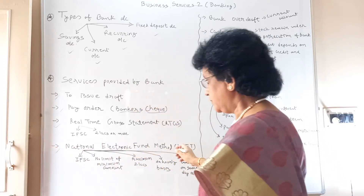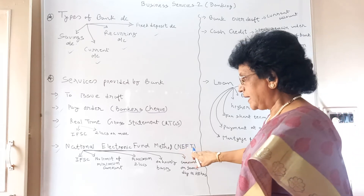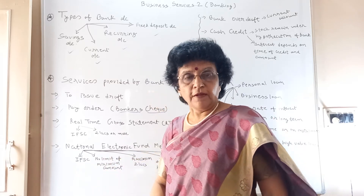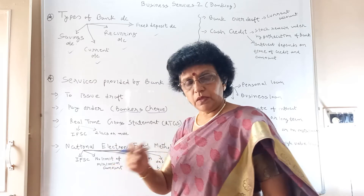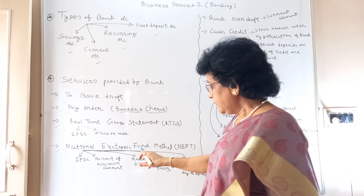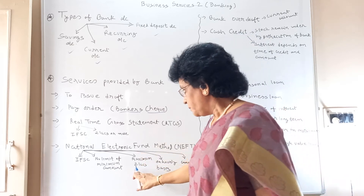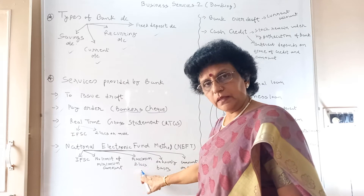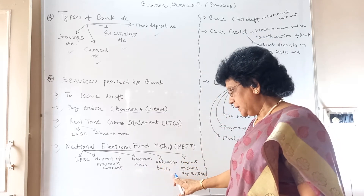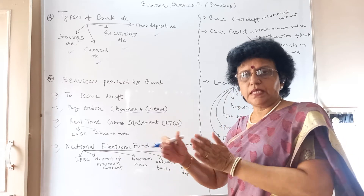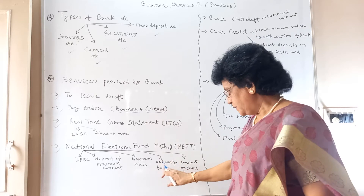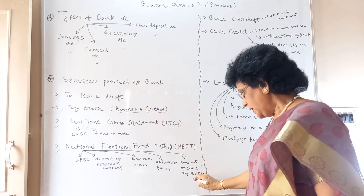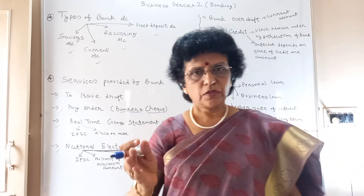Next is NEFT — National Electronic Fund Transfer Method. Here also you need the IFSC code. There is no minimum amount limit. If you want to send less than 2 lakhs, you use NEFT. For amounts of 2 lakhs or more, RTGS is used. With NEFT, money is transferred on an hourly batch basis. Your amount will be credited to the other party either on the same day or within a maximum of 48 hours.